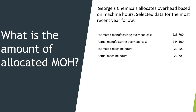This example is going to show you how to allocate overhead to a job. We have George's business. He allocates overhead based on machine hours. We have estimated overhead, estimated machine hours, and actual machine hours.